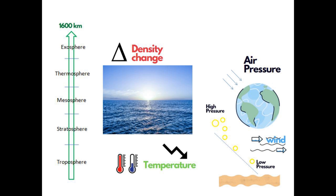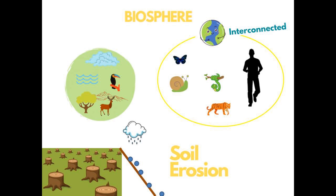Air always moves from high pressure to low pressure areas, and the moving air is called wind. And the last domain we have is biosphere. A place where air, land, and water meet is said as biosphere. Biosphere comprises everything from a tiny organism to a huge size mammal. Humans are also a part of biosphere. So by nature, all are interconnected and dependent on each other, either directly or in indirect form.